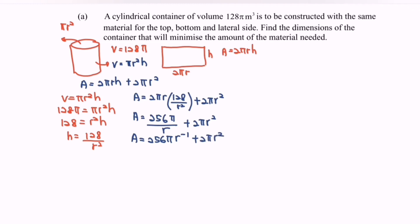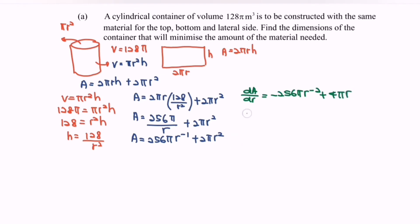Next, differentiate the area with respect to r. The first derivative is dA/dr = −256π·r⁻² + 4πr. The second derivative is d²A/dr² = 512π·r⁻³ + 4π.